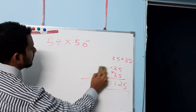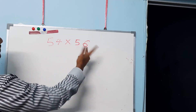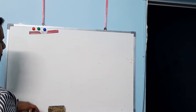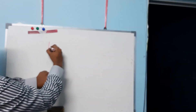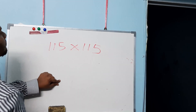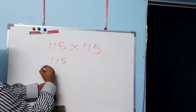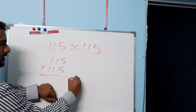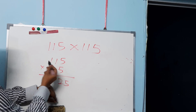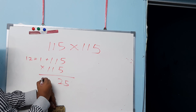What if we come across triple-digit sums? This method so far involves two-digit numbers. For example, 115 times 115, and then 12 times 11.